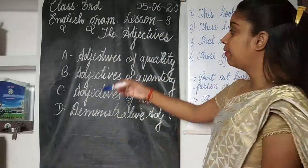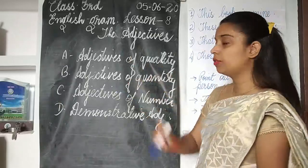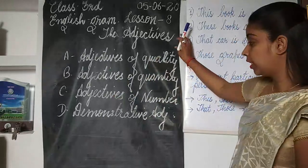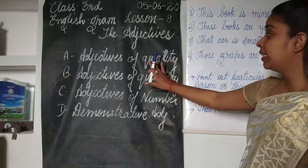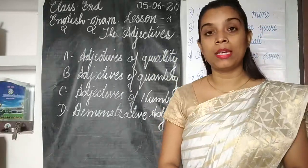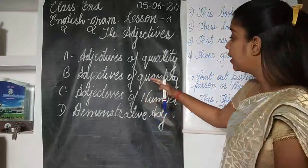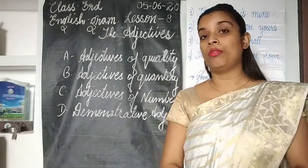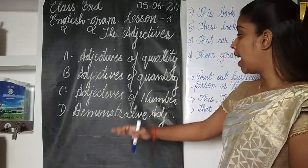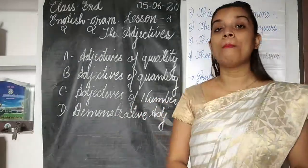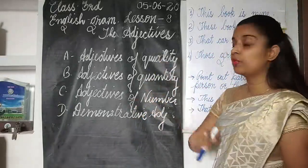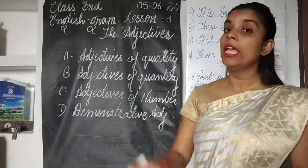In my previous session, I explained the first three kinds of adjectives: adjectives of quality, adjectives of quantity, and adjectives of number. Adjective of quality tells about what kind of person, place, animal, or thing something is. Adjectives of quantity tells about how much, and adjectives of number tells how many persons, places, or things are indicated.